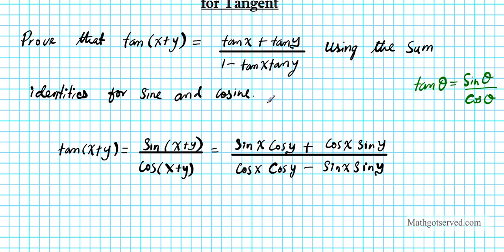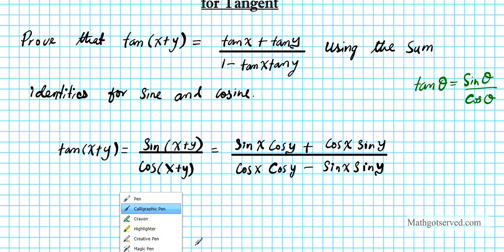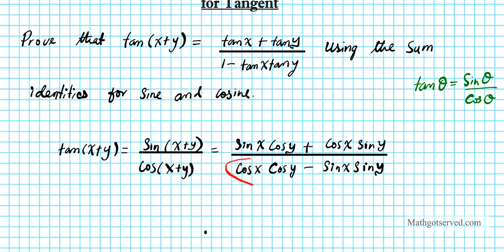The goal is: how do I make this expression become the target equation? Notice there is a plus in the numerator and a minus in the denominator, and to the left of that minus you have 1 — that's our hint. The question is: how can I make the cosine x cosine y term equal 1? I just need to divide it by cosine x cosine y.